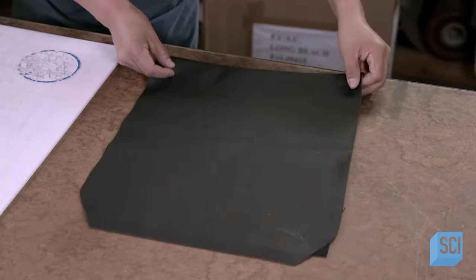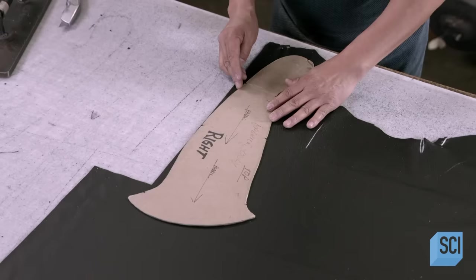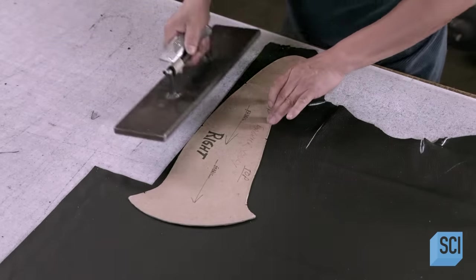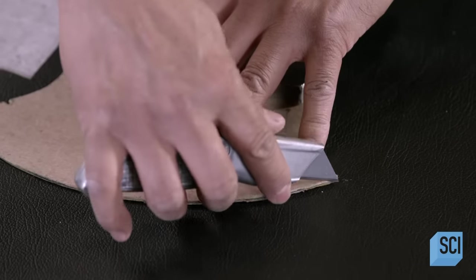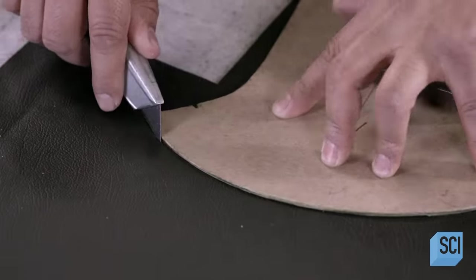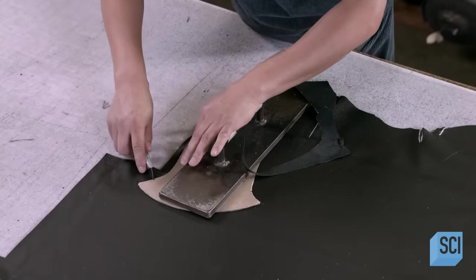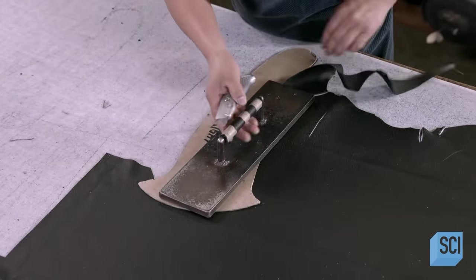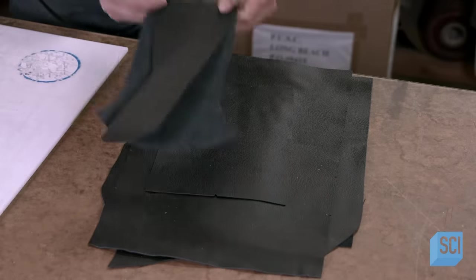By cutting carefully, he'll be able to get all the leather he needs for one chair from this large hide. That's important because color and grain can vary from hide to hide. Using pieces from the same one will give the chair a consistent look and texture.